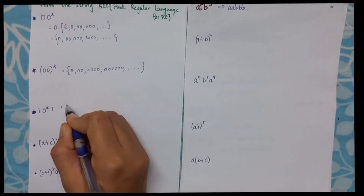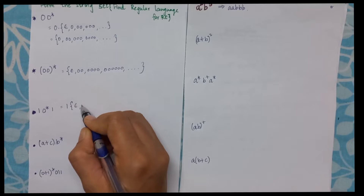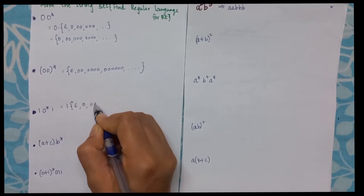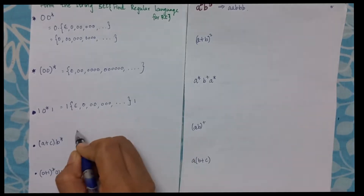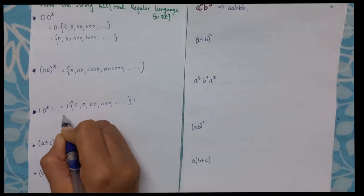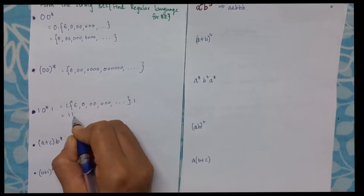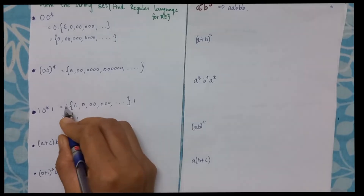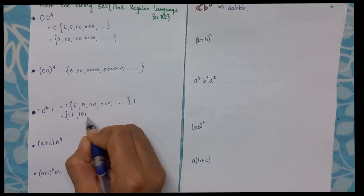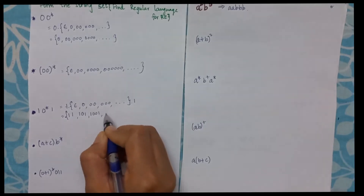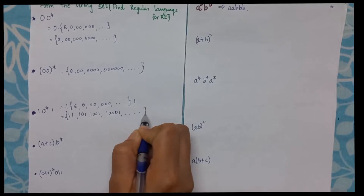The next example has 1·0*. So it will have epsilon, 00, 000, and so on, each followed by another 1. Combining these I will get 1, 100, 1000, and so on.